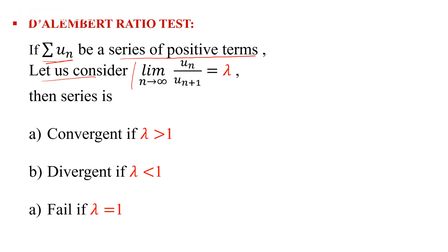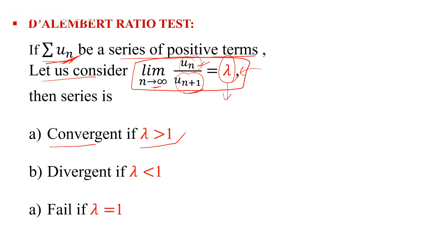We consider the limit as n tends to infinity of u_n divided by u_(n+1), where u_n is the nth term and u_(n+1) is the (n+1)th term of the series. We divide the nth term by the (n+1)th term to get a number called lambda. If lambda is greater than 1, the series is convergent. If lambda is less than 1, the series is divergent. When lambda equals 1, the test fails and we must apply another test.